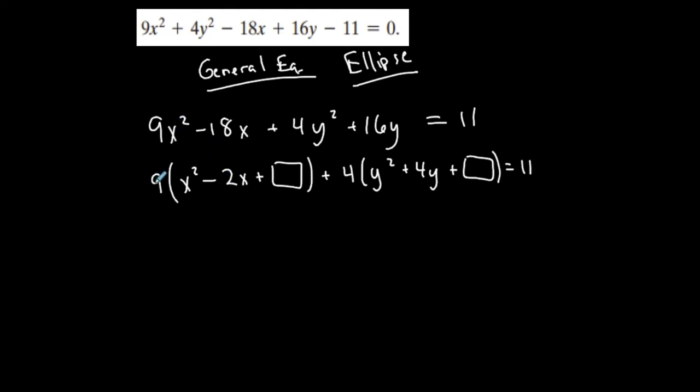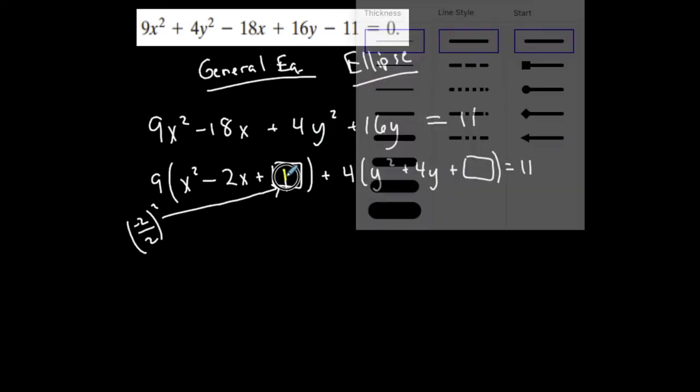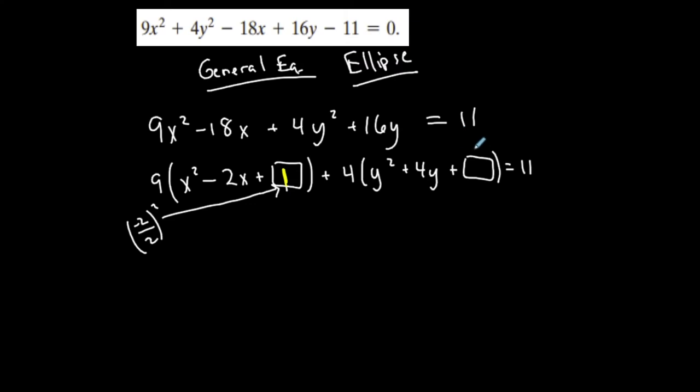I had to take out a 9 from my x group because I need a coefficient of 1 in front of the square. I had to take out a 4 from my y group. To determine what goes into the box to complete the square, you take b and divide by 2 and square it. That gives me 1.